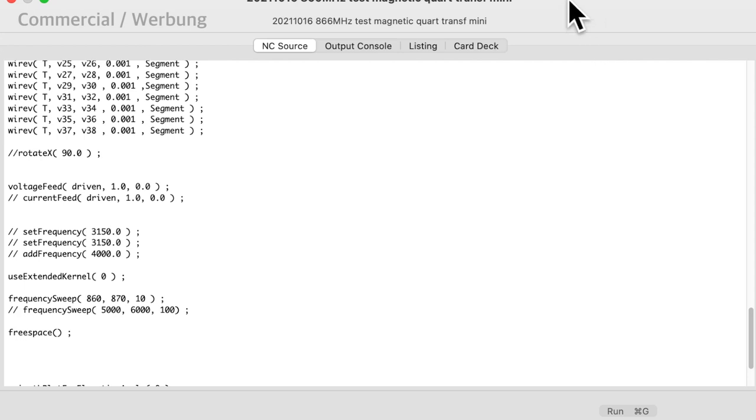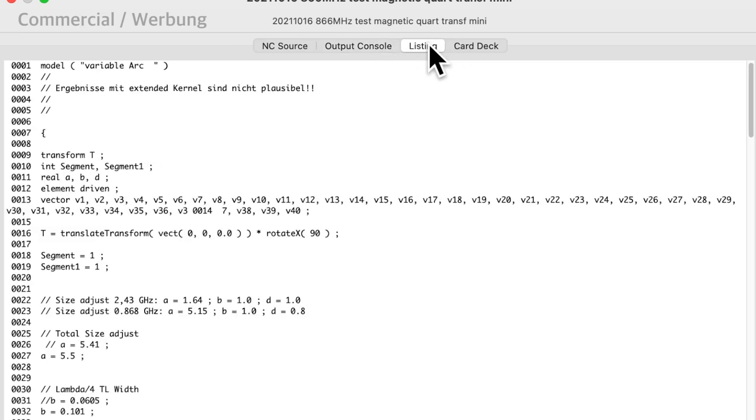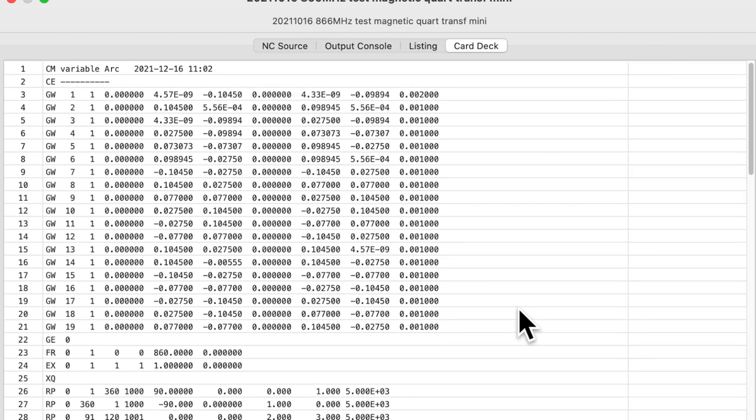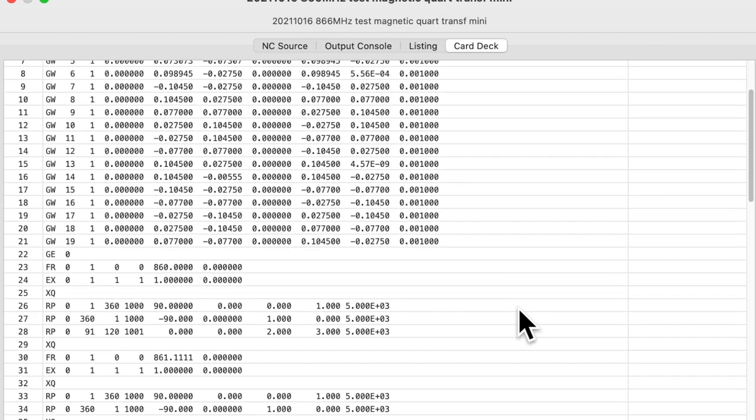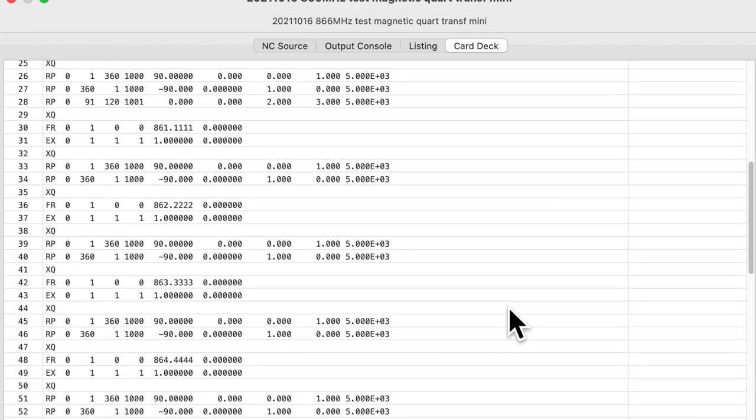The output console seems to be empty. Then, we get a listing here, where you can get error messages in case your input is wrong. And in the card deck, we get the original NEC input format. I think this should be compatible then with all NEC2 versions.